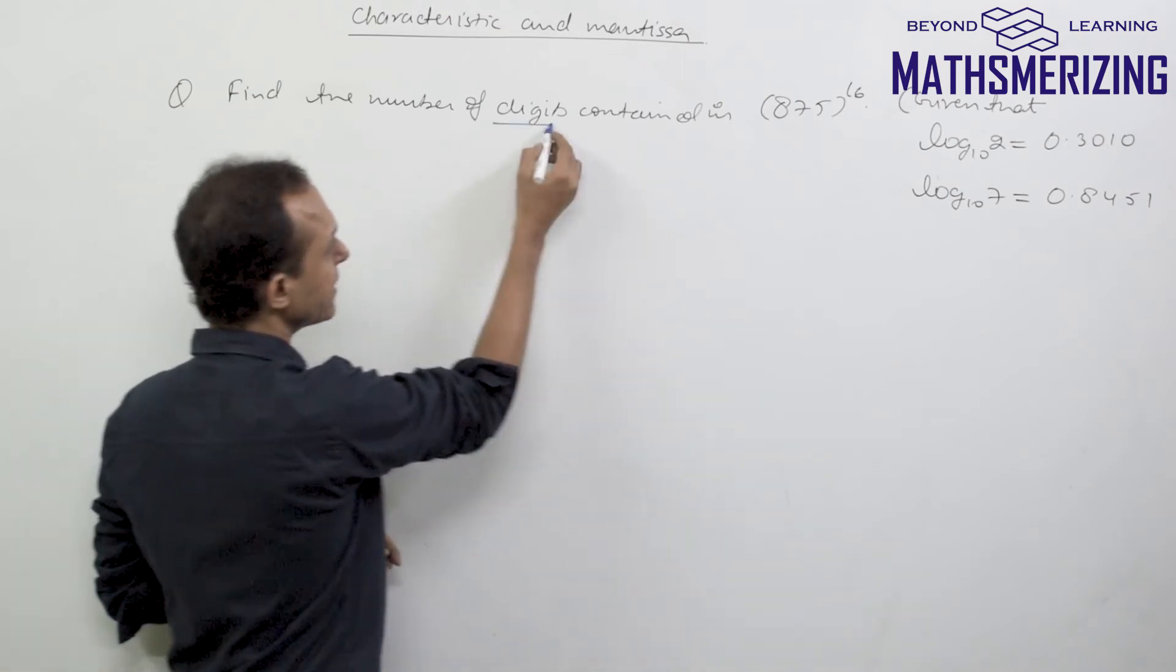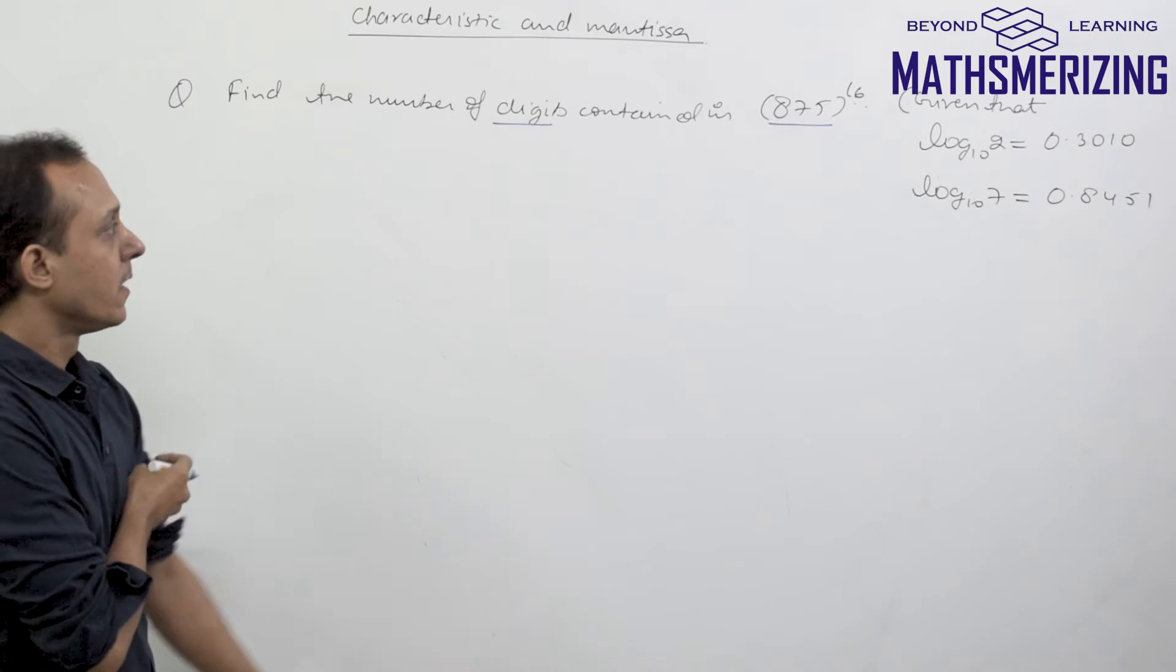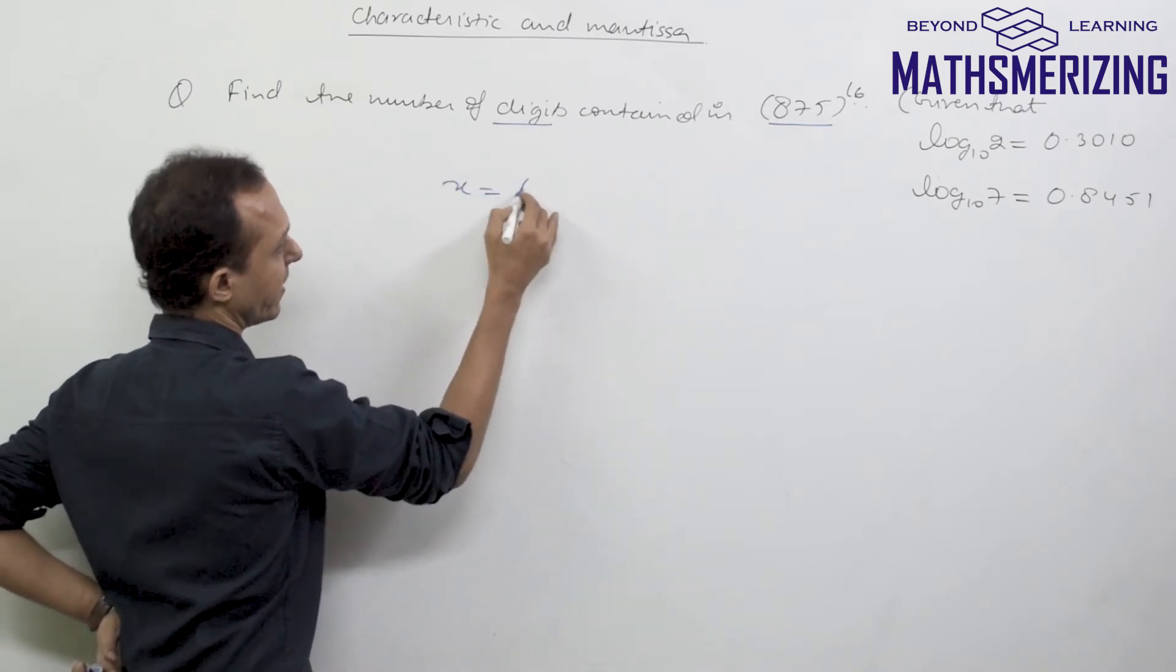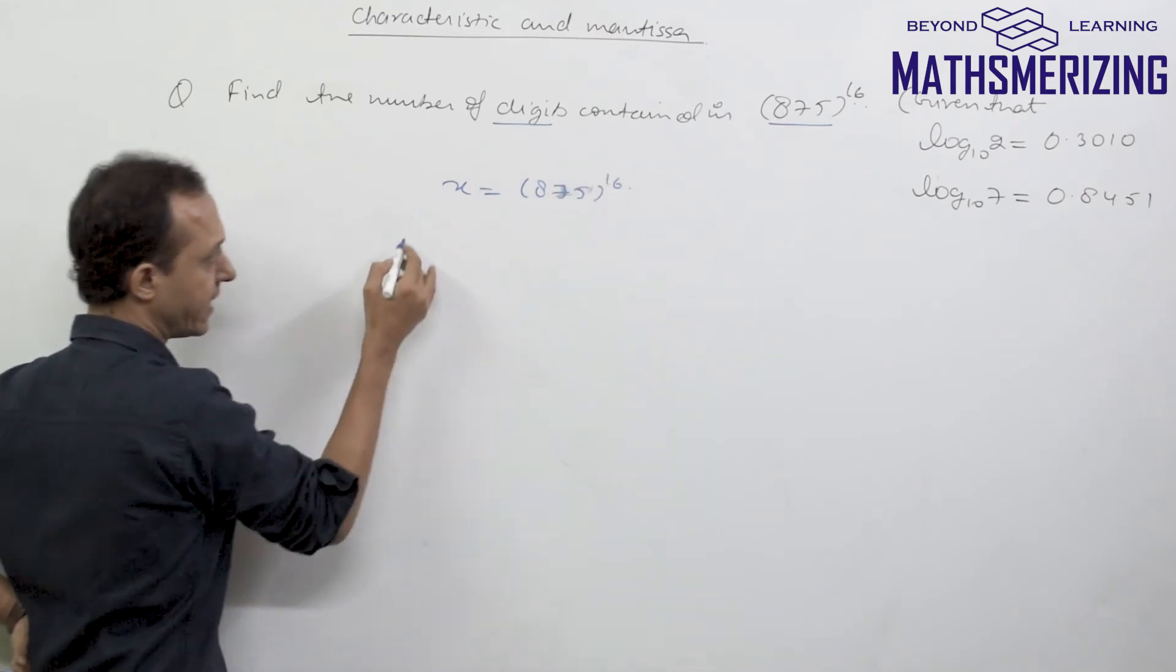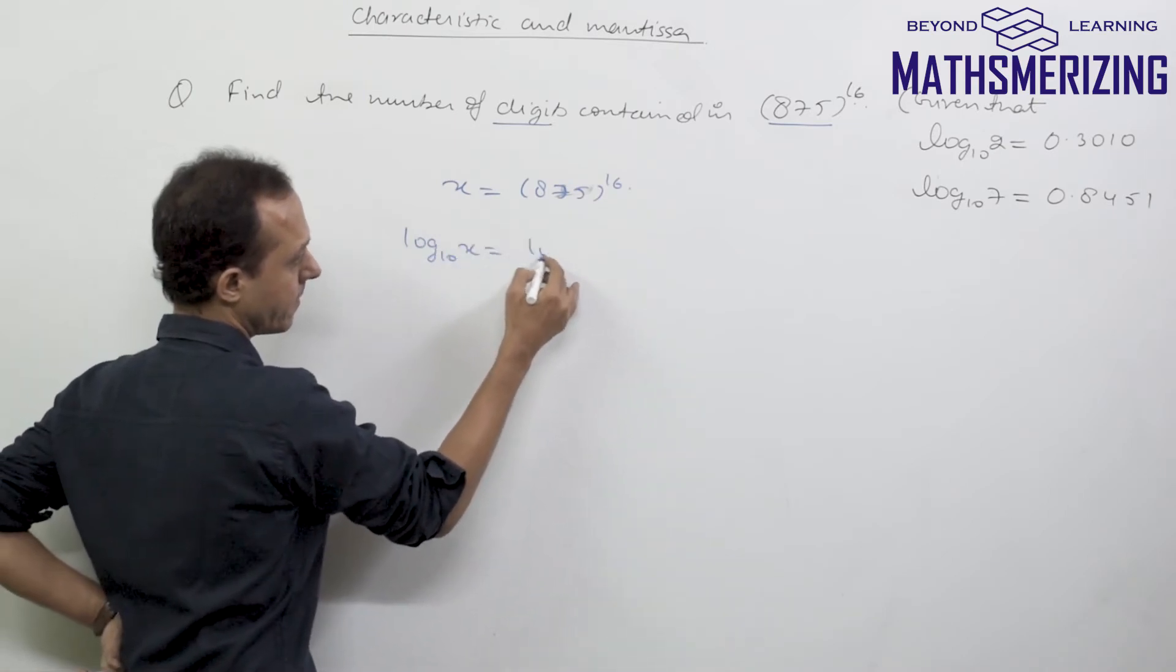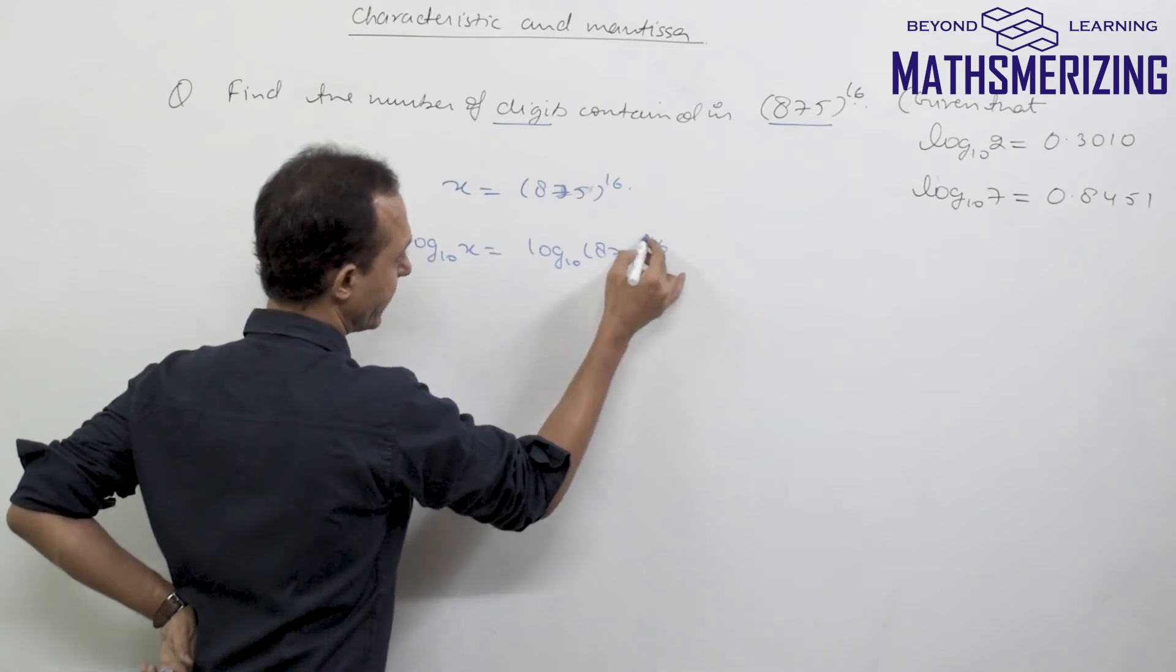Now the question is: find the number of digits contained in 875 to the power 16. What I will do is write this as some number X, which equals 875 to the power 16. I'll take log both sides to the base 10.